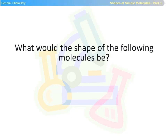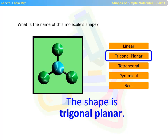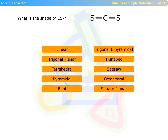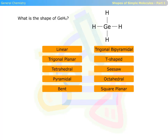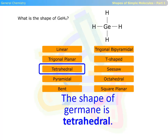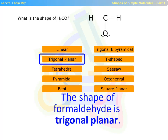What would the shape of the following molecules be? The first molecule has a trigonal planar shape. The shape of carbon disulfide is linear. The shape of germane is tetrahedral. The shape of formaldehyde is trigonal planar.